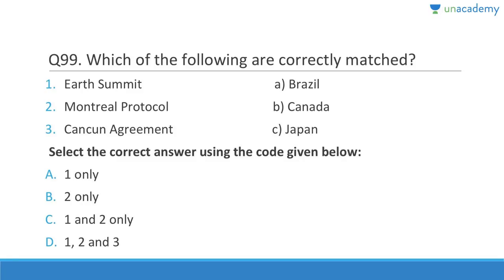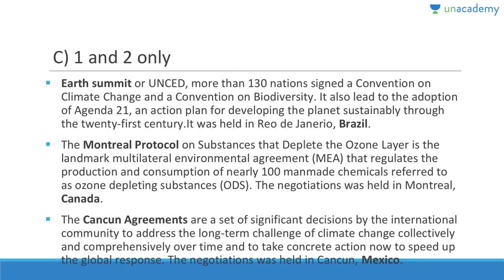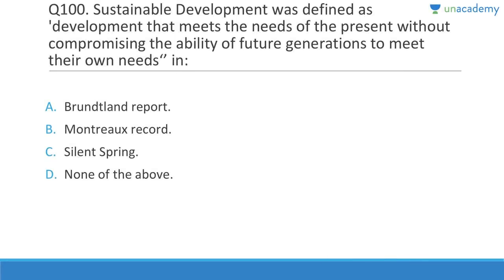Question 99: Earth Summit is in Brazil — correct. Montreal Protocol is from Canada — correct. Cancun Agreement is in Mexico, not Japan — so answer is one and two. The Montreal Protocol is for ozone-depleting substances and is considered one of the most successful international treaties. The Cancun Agreement addresses long-term climate change challenges.